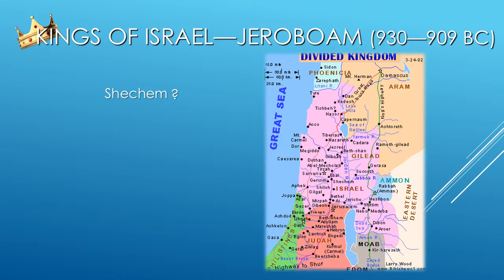Shechem — why is that name so familiar? Well, Shechem was 40 miles north of Jerusalem, situated in a mountain pass on the main north-south trade route running right through the middle of the country. If you happen to live in Wisconsin like me, you might picture La Crosse as Jerusalem. Then Shechem would have to be Tomah, at the juncture of two interstate highways. You just can't get to La Crosse very easily from most of Wisconsin without going through Tomah first. Well, it was the same way with Shechem — you just couldn't get to Jerusalem from at least the northern part of the country very easily without first going through Shechem.